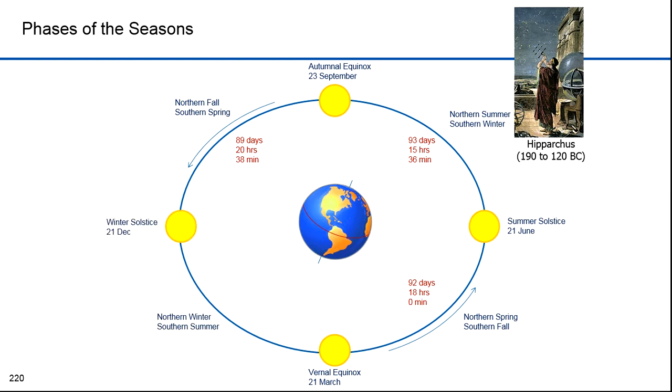Next is winter solstice. It's on 21 December. It marks the beginning of winter in the north and summer in the south. It's 88 days, 23 hours and 46 minutes long. We're lucky in the north. Short winters and long summers.